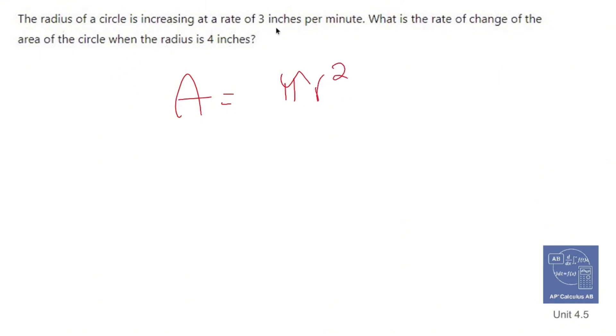I care about the change in the area. So I'm going to ddt both sides. So ddt, ddt. The derivative of a with respect to t is going to be dA dt. And that's going to equal, nothing happens here with pi, multiply by 2, make you an r, and attach dr dt. OK. Whenever you take the derivative of an r squared with respect to t, you have to attach the derivative with respect to t.